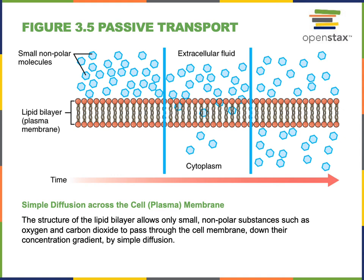Passive transport refers to any movement of chemicals across the plasma membrane that does not require ATP in order to drive that transport. A passive transport mechanism will therefore be a type of diffusion.